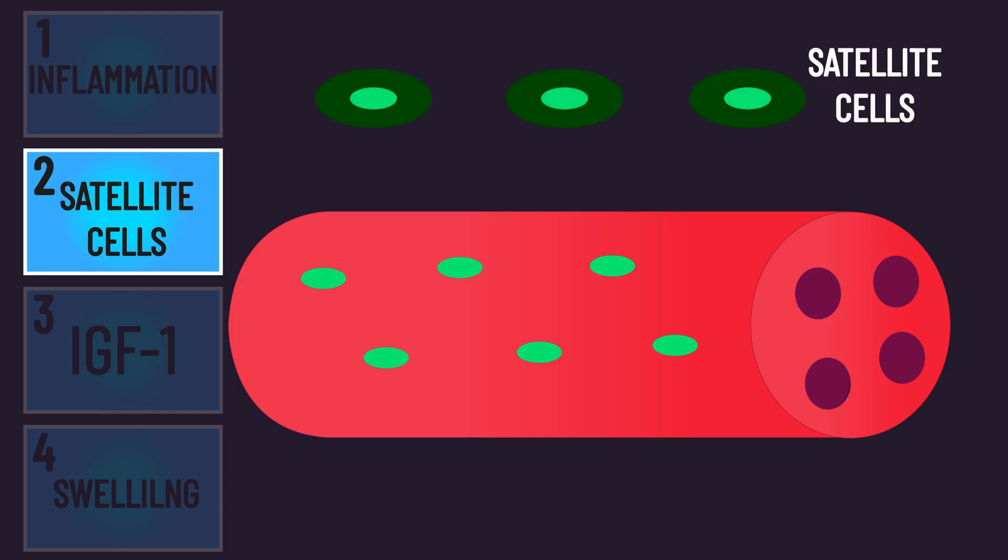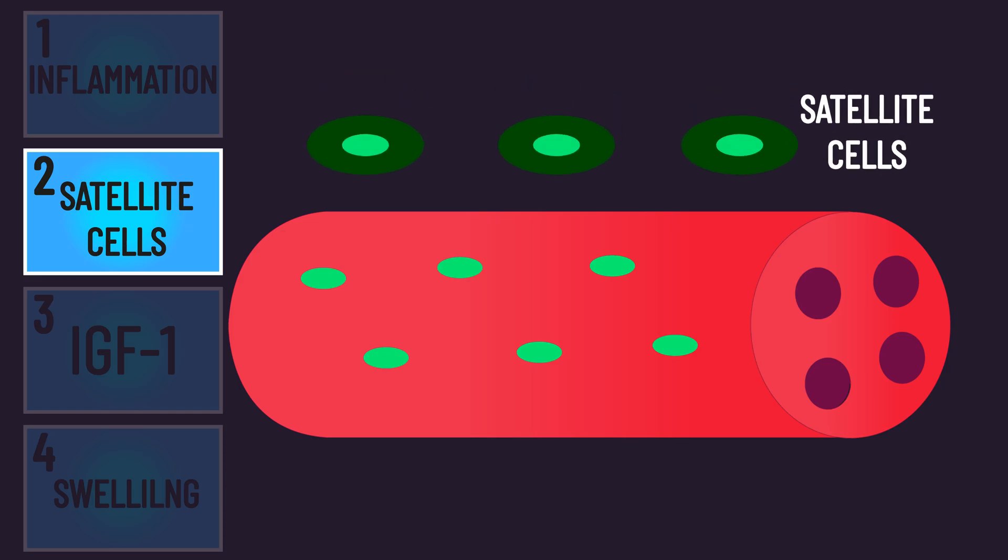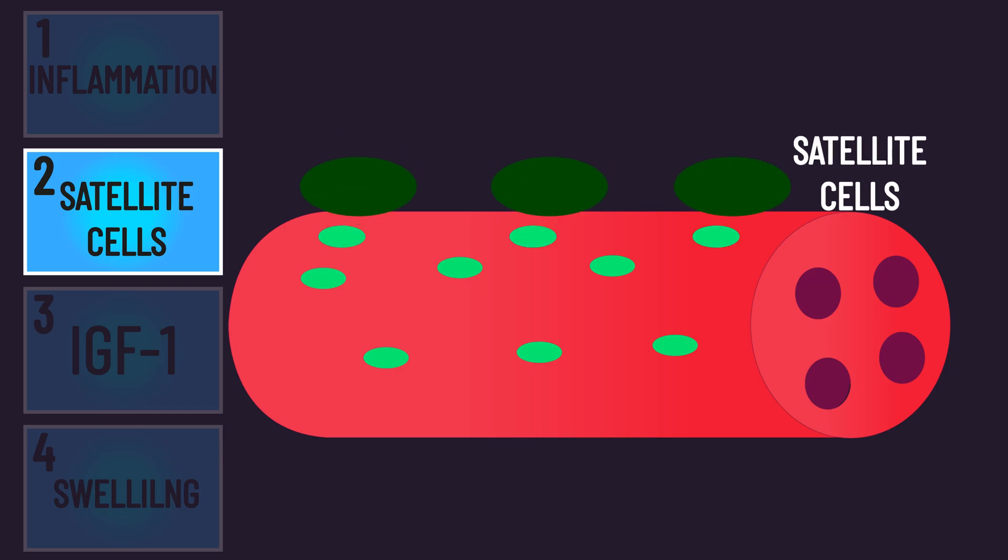This is where satellite cells come in. They are found surrounding muscle fibers and can fuse to muscle fibers and donate nuclei, resulting in an increase in myonuclei which increases the muscle fiber growth capacity. This is where damage comes into play.